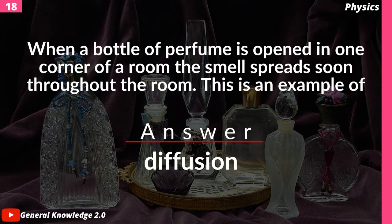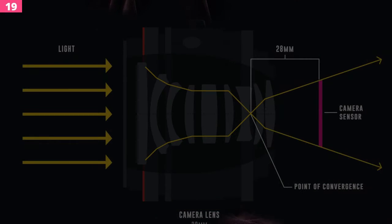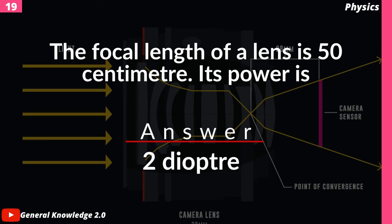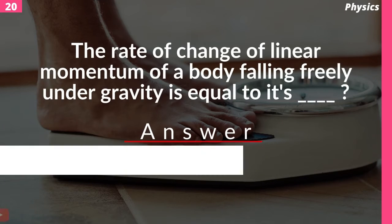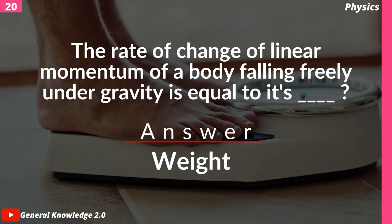When a bottle of perfume is opened in one corner of a room, the smell spreads throughout the room. This is an example of — answer: diffusion. The focal length of a lens is 50 centimeters; its power is — answer: 2 diopters.